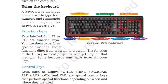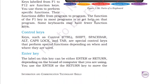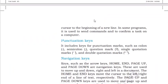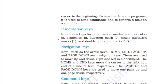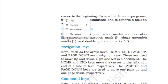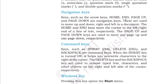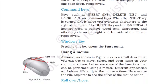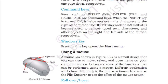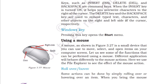Next is using the mouse. You can see a normal left click, right click, and scroll. Rollover or hover means moving the cursor around the screen. Point and click means pointing at something and clicking. Drag and drop means picking something and dragging it to another location.